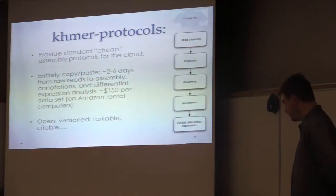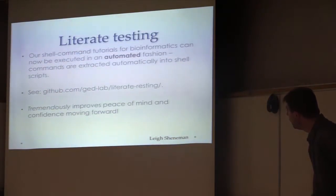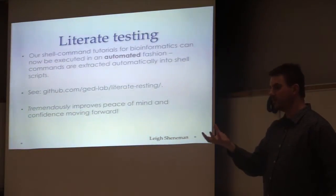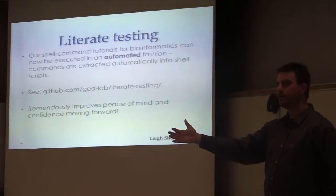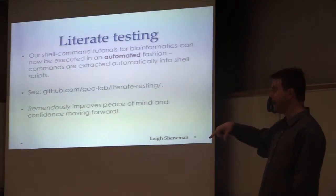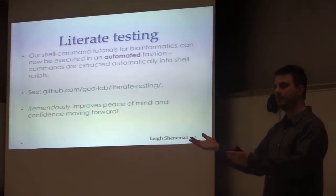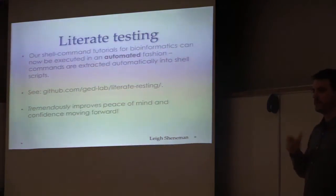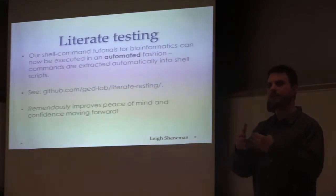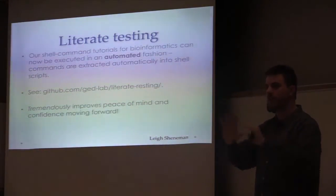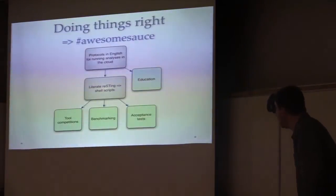And of course, these things are on GitHub, they're open, they're under CC0, they're versioned, they're citable, and you can fork them and do whatever you want with them. So why is this cool? We've also added literate testing onto this. And what literate testing does is it goes through the protocols, pulls out all of the commands in the protocols, and runs them in shell scripts. So our protocols that are tutorials for other people to execute can also be automatically executed by us whenever we feel like. And these double now as our acceptance tests.